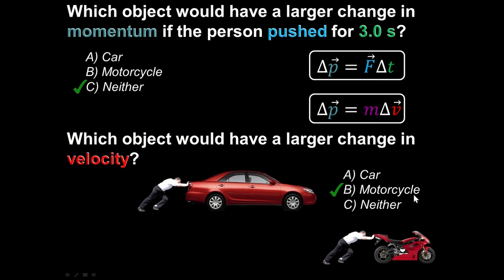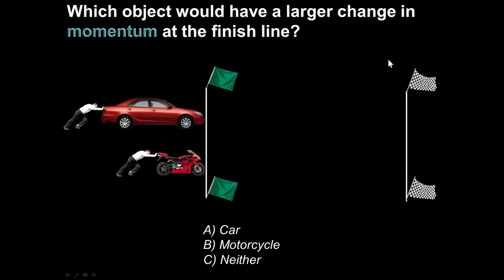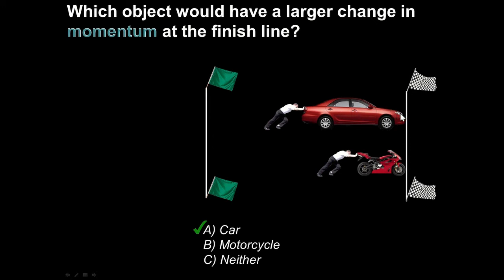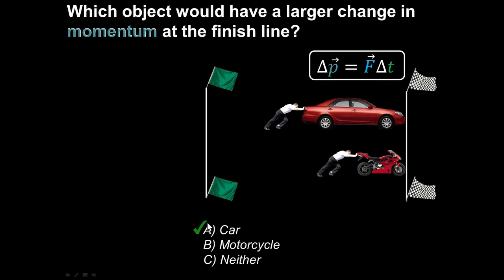Now a race track: which object has the larger change in momentum by the time it crosses the finish line? It's going to be the car. The motorcycle gets across the line quickly, but the car takes much longer. If the force was the same, the time that force was applied was much longer on the car because it took longer to travel that distance. Same force, longer period of time — more impulse on the car, more change in momentum on the car.